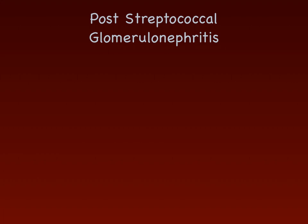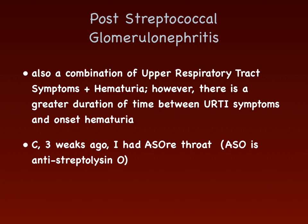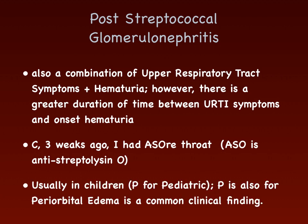Post-streptococcal glomerulonephritis (PSGN) also presents with upper respiratory tract symptoms and hematuria, but with a greater duration of time between the two. A helpful expression: 'C3 weeks ago I had a sore throat.' C3 refers to C3 complement, which is low in PSGN. ASO (anti-streptolysin O) is elevated in PSGN. PSGN is typically seen in children — P is for pediatric. P is also for periorbital edema, a common clinical finding in PSGN.